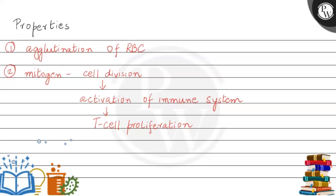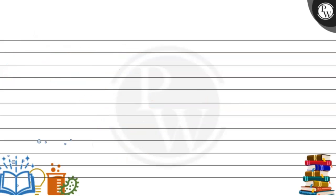The third property of Con Canavalin A is that it induces programmed cell apoptosis — so it can induce cell death as well. These are some of the key properties of Con Canavalin A.